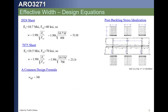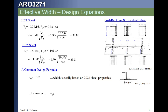This is our common design formula, essentially based on 2024 properties: 15t on either side of the fasteners.